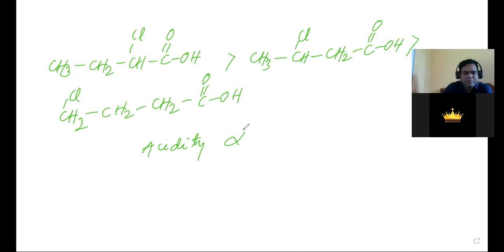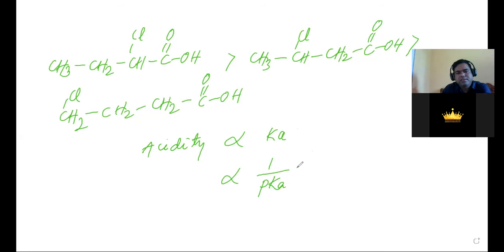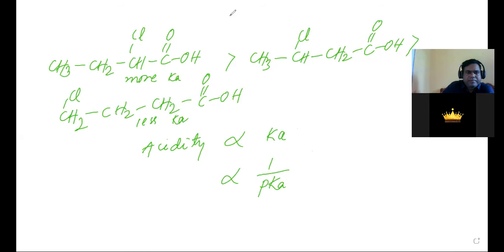Acidity is proportional to the Ka value and inversely proportional to pKa. The acid with higher Ka has greater acidity. For more acidic compounds, Ka is higher and pKa is lower.